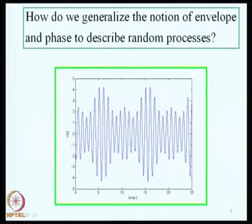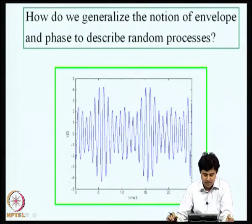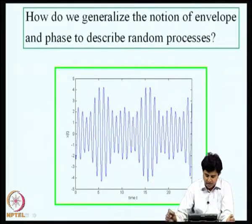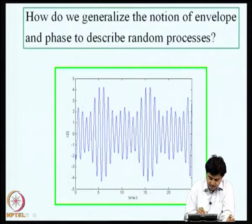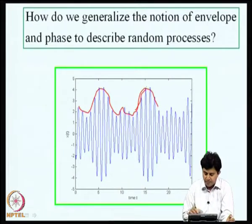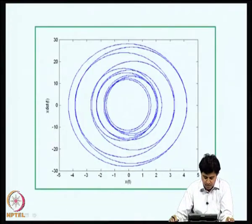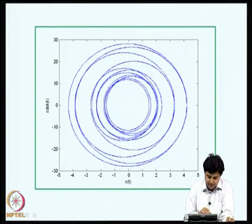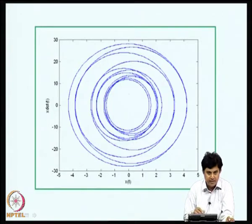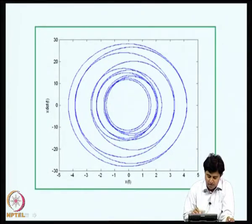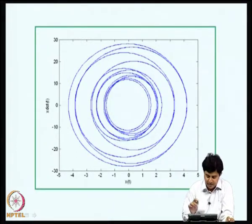We now pose the question: how do we generalize the notion of envelope and a narrowband phase to describe random processes? A sample of a narrowband process shows that the envelope should intuitively pass through all the peaks — but we need to formalize this notion. If we look at the plot of X-dot(t) versus X(t), a narrowband process does not fill up the entire space — it occupies certain bounded space. In contrast, if X(t) is a broadband process, it simply fills up this space. This is another feature to bear in mind.